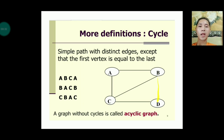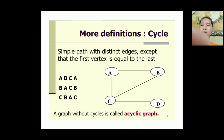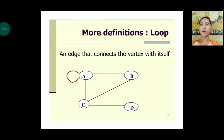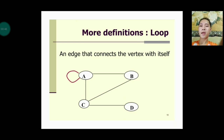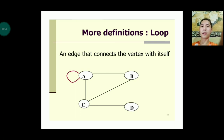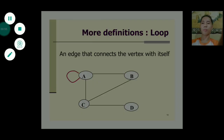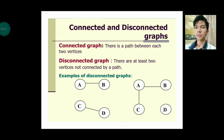A loop is an edge that connects a vertex with itself. For example, edge a-a means vertex a is connected to itself, and that is called a loop.